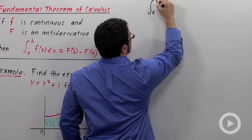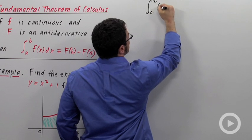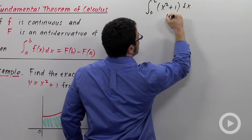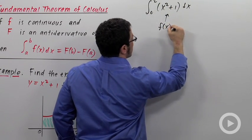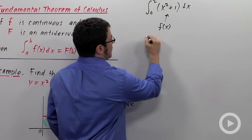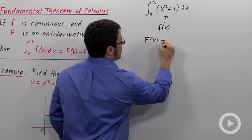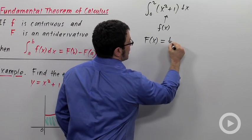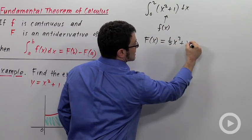In this integral from 0 to 2, this is my little f of x. I need an antiderivative for it. And an antiderivative would be capital F of x equals 1 third x cubed plus x.